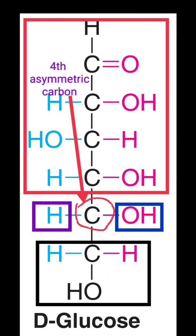The fifth carbon is also an asymmetric carbon and it becomes the fourth asymmetric carbon of glucose. The whole part in the red box is considered as one different group, hydrogen is a different group, and OH is a different group. The remaining part in the black box below the fifth carbon is also a different group. So this fifth carbon of glucose is bonded to four different groups, making it the fourth asymmetric carbon.